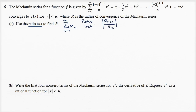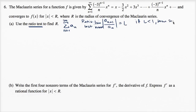This ratio by itself might not be a constant like in a geometric series — it might actually be a function of n. So we want to see the behavior of this ratio as n gets really large, so we take the limit as n approaches infinity. If this limit exists and equals L: if L is less than one, the series converges; if L is greater than one, it diverges; if L equals one, it's inconclusive.